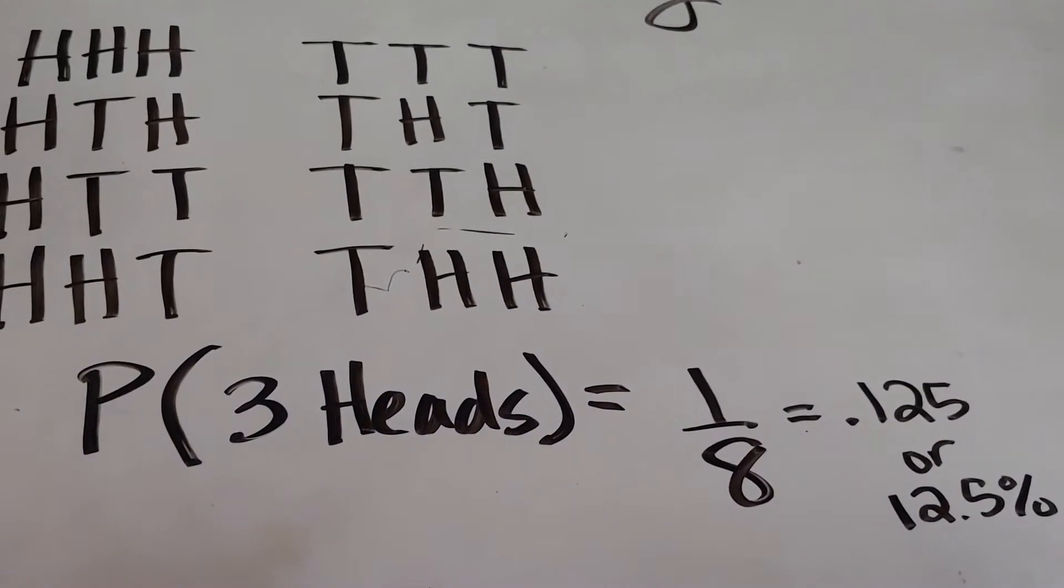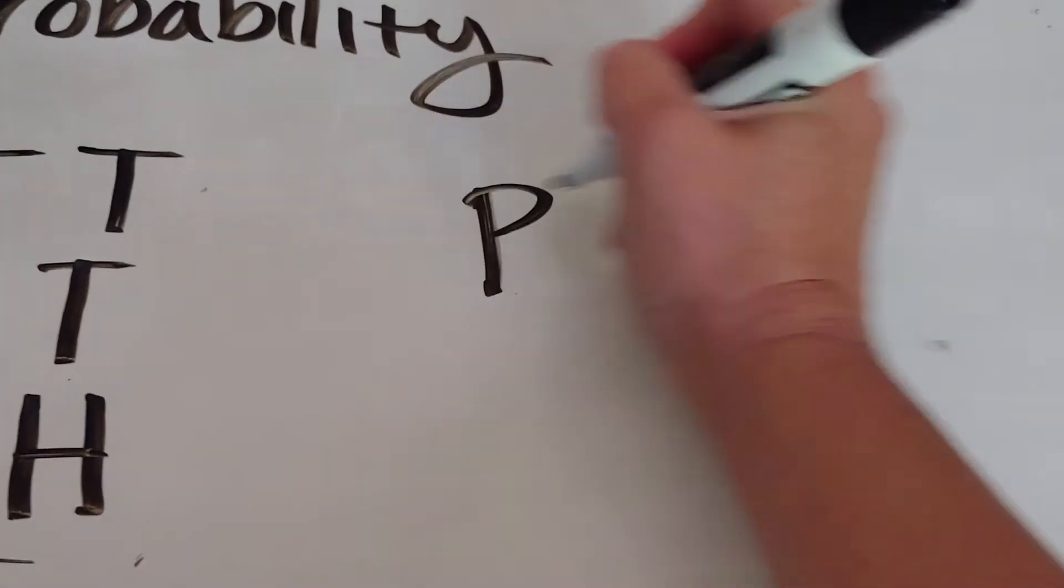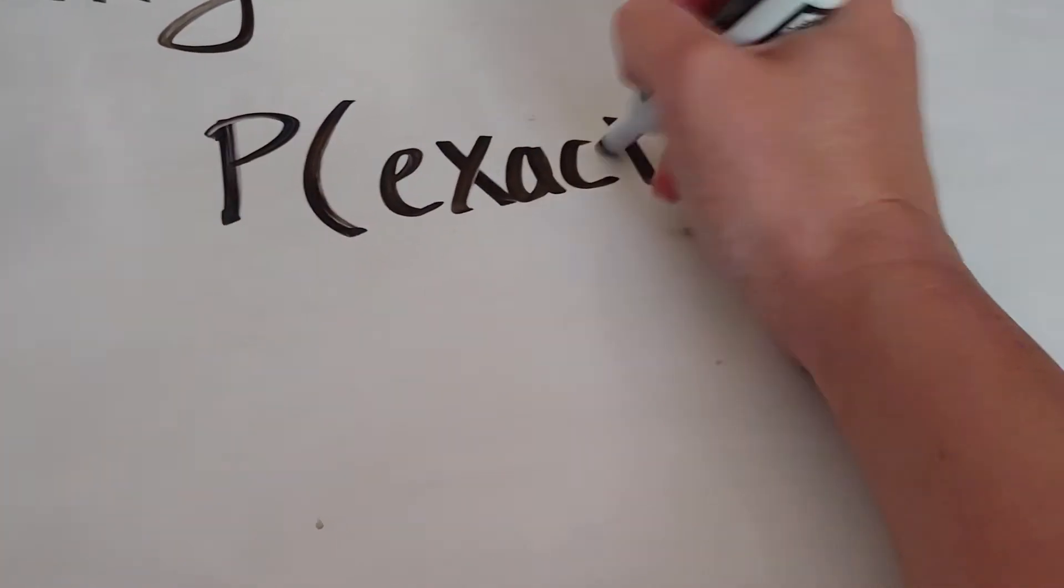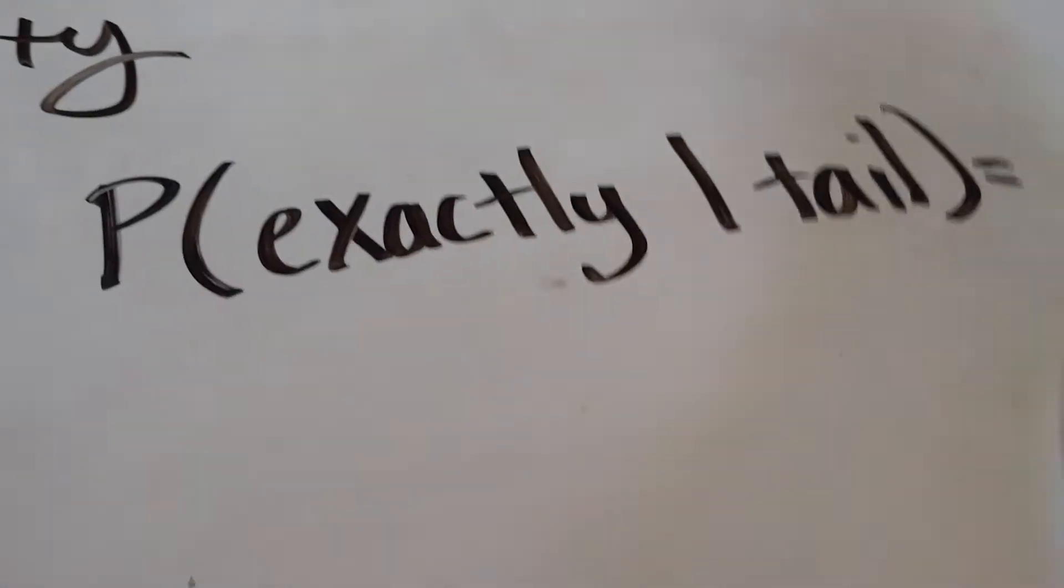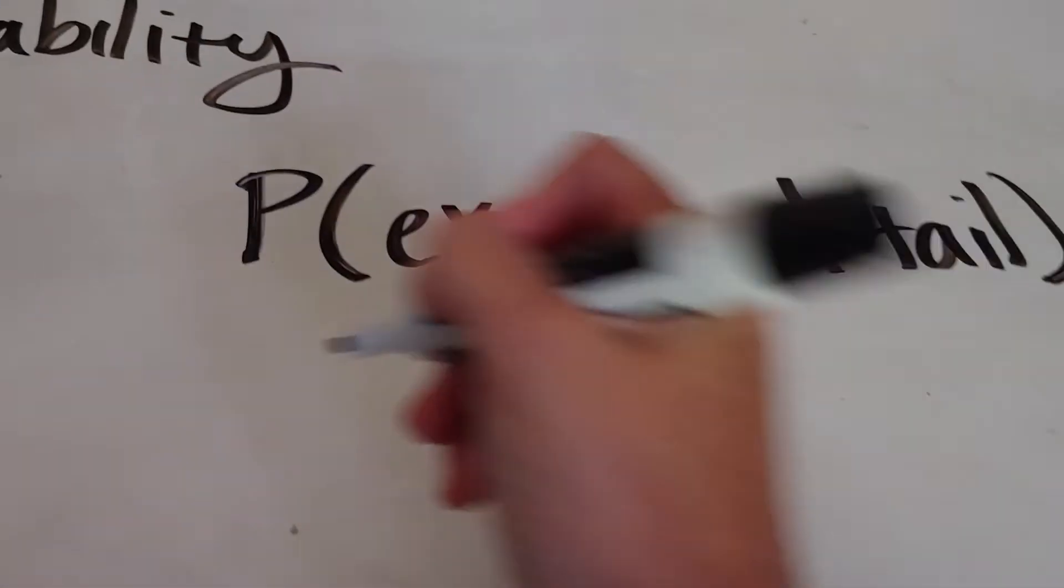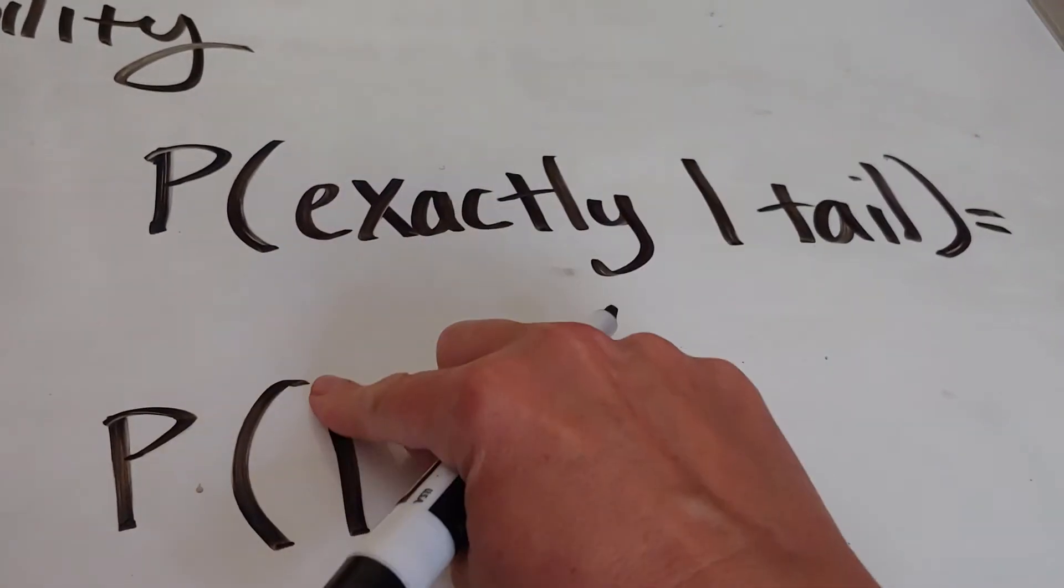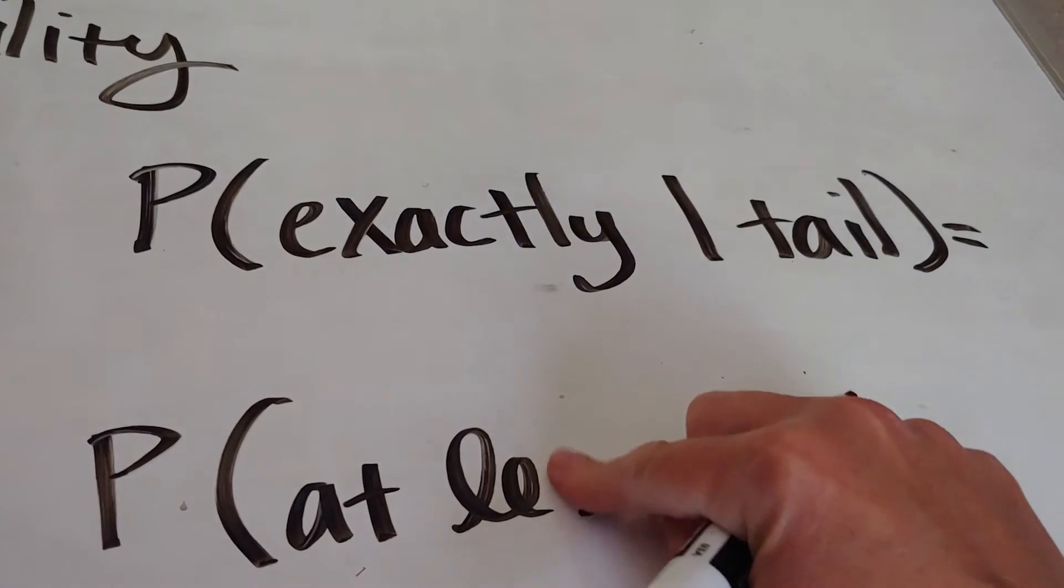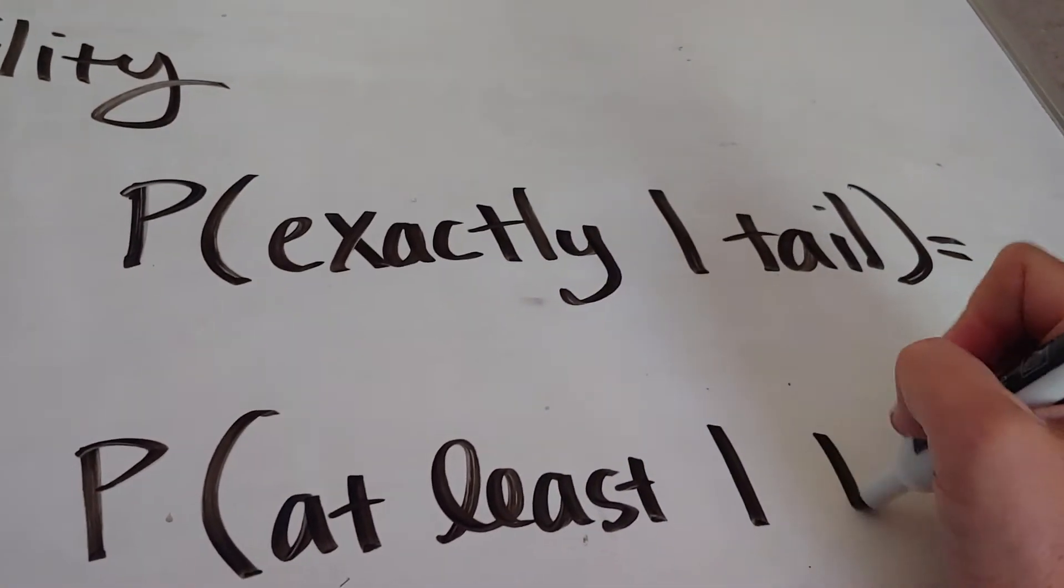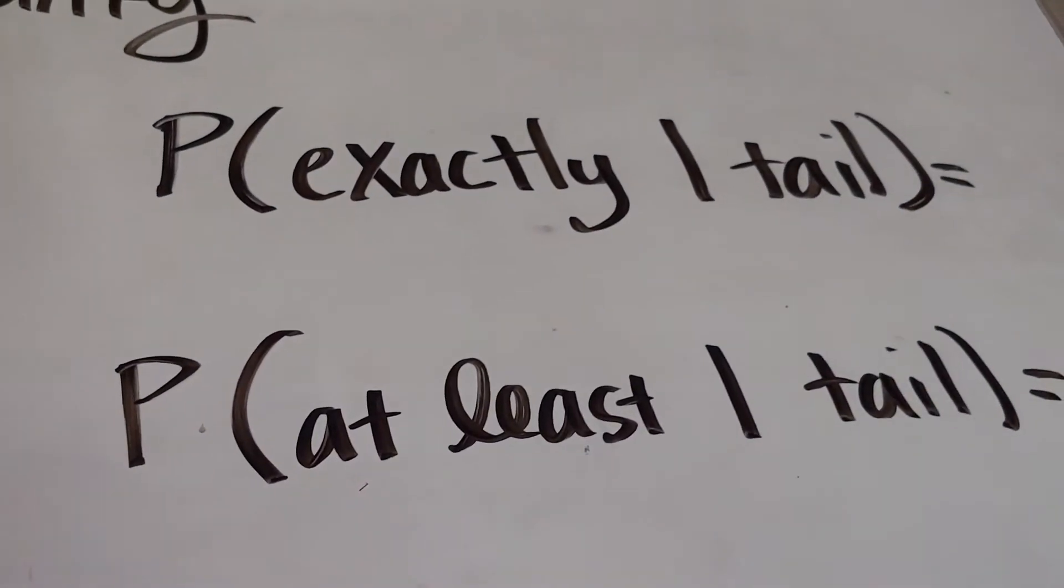The trickier part is when we talk about what's the probability of getting exactly one tail. Exactly one tail. Or what's the probability of getting at least one tail? These are two different questions, so let's talk about the difference in them.